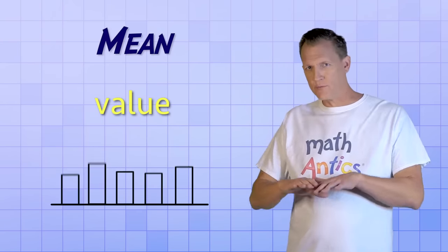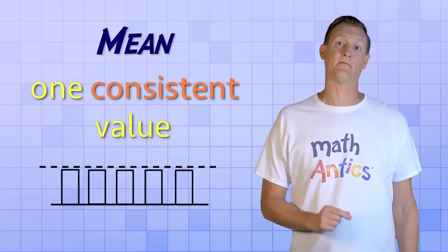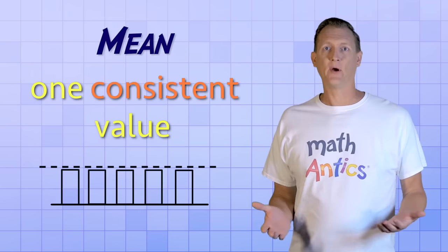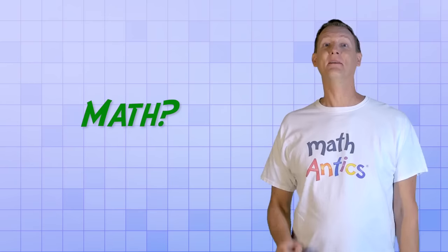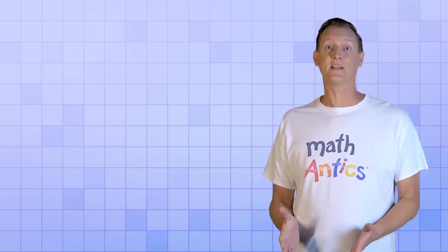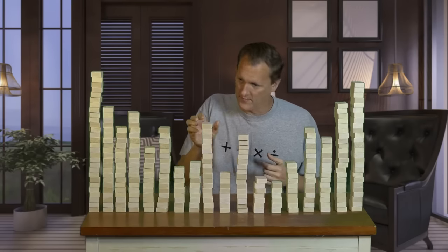It's the value you'd get if you could smooth out or flatten all of the different data values into one consistent value. But is there a way that we could use math to calculate the mean of a dataset? After all, it would be very inconvenient if we always had to use stacks of blocks to do it. There's gotta be an easier way…